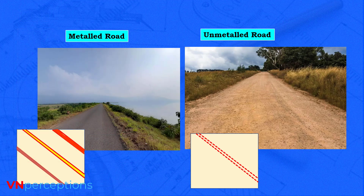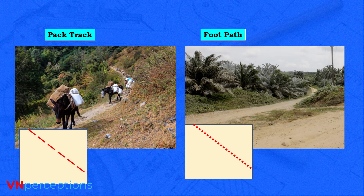To summarize road types: a thick red line or double red line represents a metal road. An unmetalled road is one that is not developed and can only be used in dry seasons; in the rainy season it becomes marshy and unusable. Pack tracks are shown as dashed lines and footpaths as dotted lines.